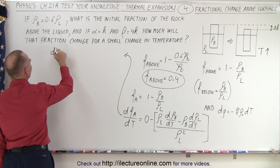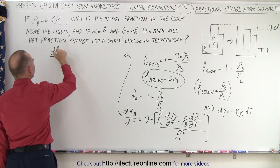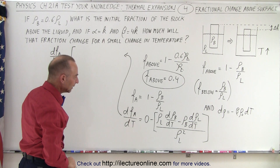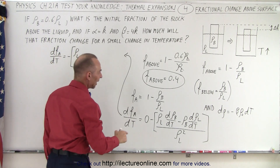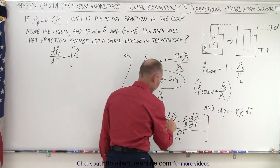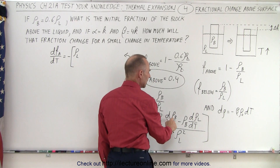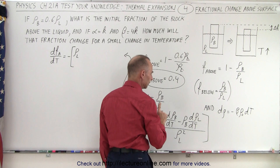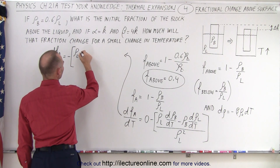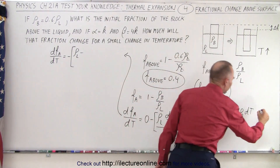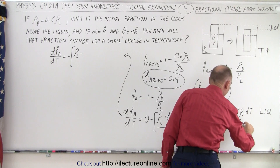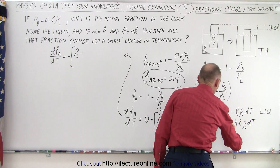The change in the fraction above with respect to temperature equals the negative of: the density of the liquid times the change in density of the block with respect to temperature, minus the density of the block times the change in density of the liquid with respect to temperature, all over the density of the liquid squared. For the liquid, the differential of density equals minus 4k times the original density of the liquid times dT.